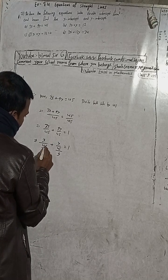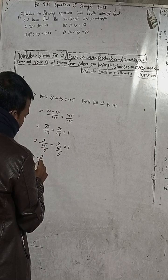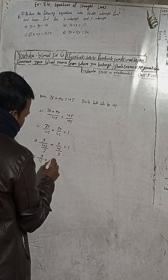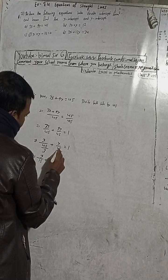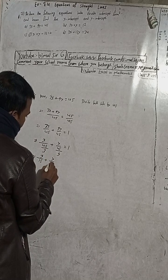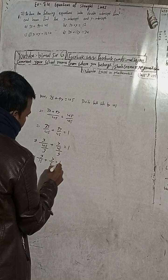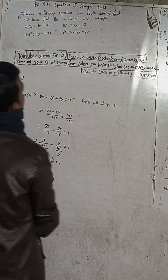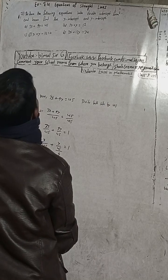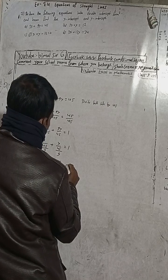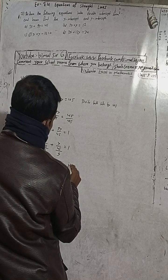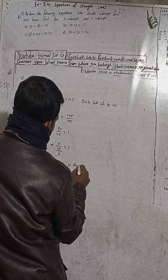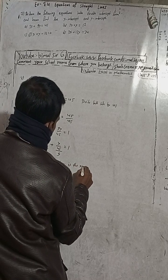So x divided by 45/3, which is 15, plus y divided by 45/9, which is 5, is equal to 1. So this gives us the reduced equation: x/15 + y/5 = 1.